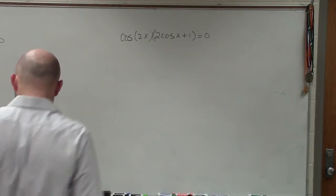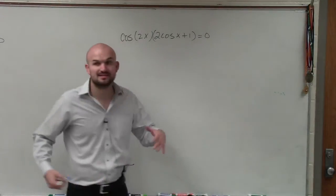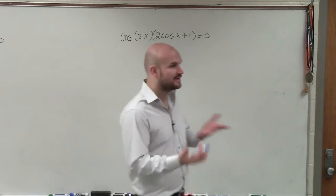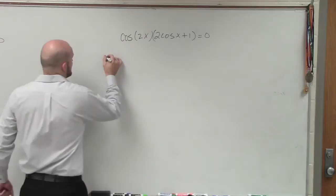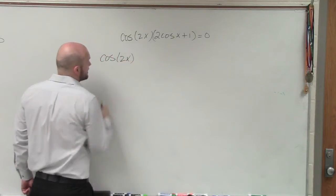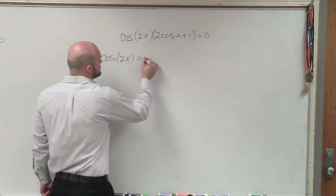So in this case, ladies and gentlemen, we are kind of set up pretty nicely because instead of having to factor something or anything else, we already have a zero product property set up. So now I can just say that I have cosine of 2x equals 0,